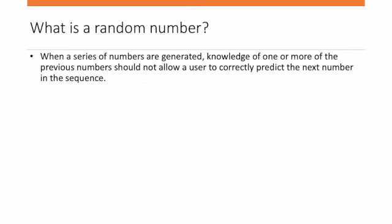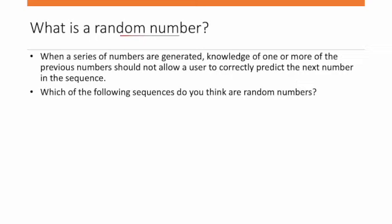What is a random number? When a series of numbers are generated, knowledge of one or more previous numbers should not allow a user to correctly predict the next number in the sequence. If we know the pattern and can predict what number comes next, it is not a random number.